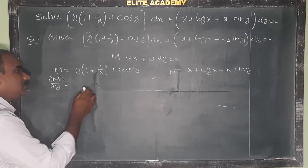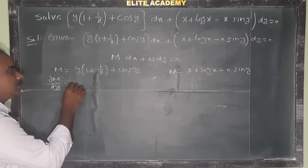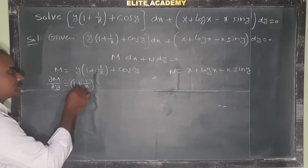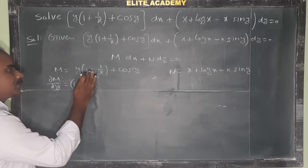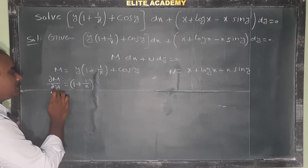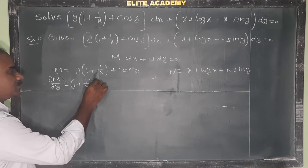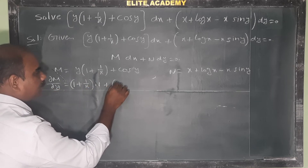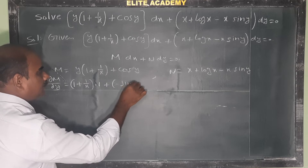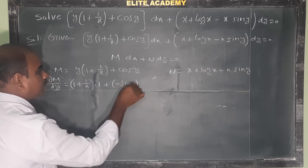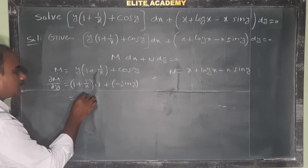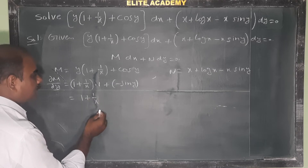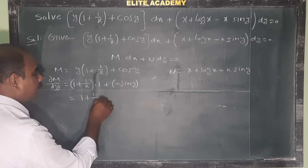For ∂M/∂y, differentiate M partially with respect to y. Since x functions are treated as constant, (1 + 1/x) is constant, and derivative of cos y is -sin y. So ∂M/∂y = 1 + 1/x - sin y.